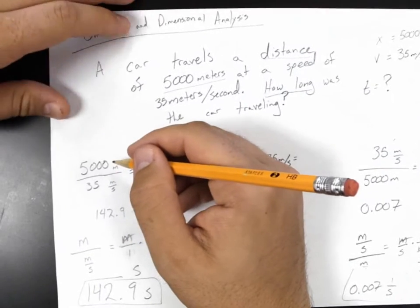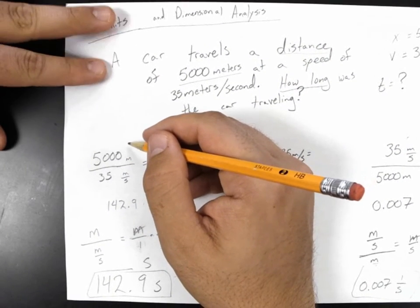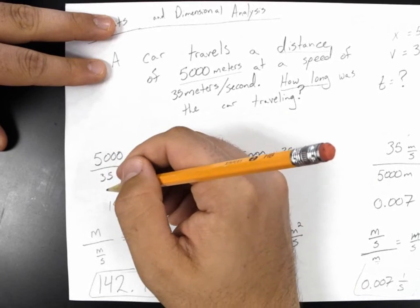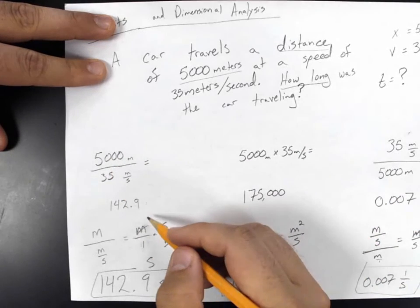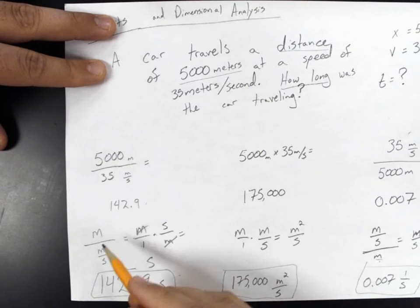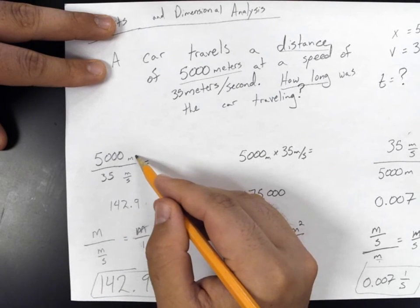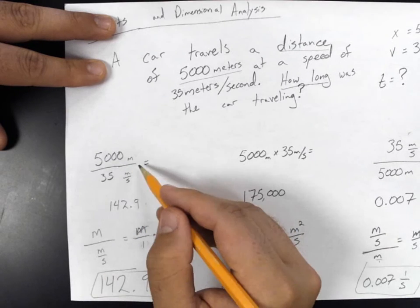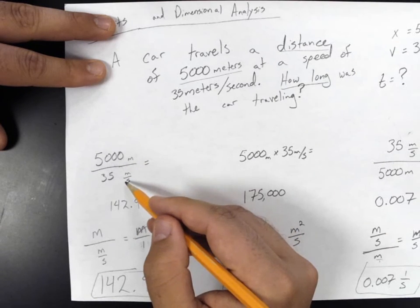All right, we find ourselves over on the last option. We take the distance divided by the speed. We find the number 142.9. It matters what the unit is, right? So we've got meters on top divided by meters per second.